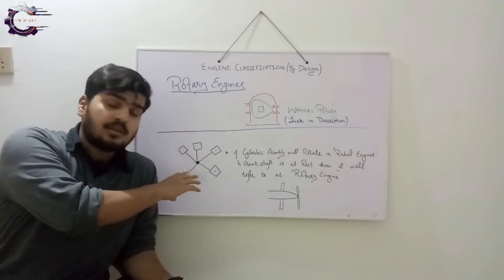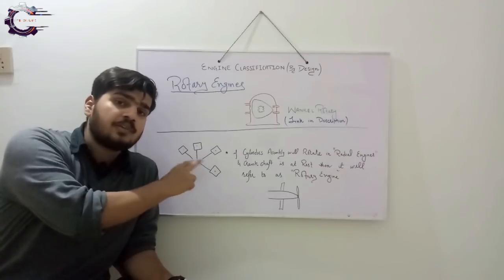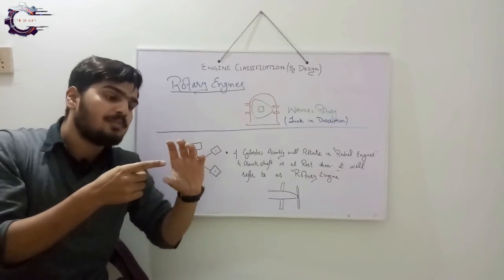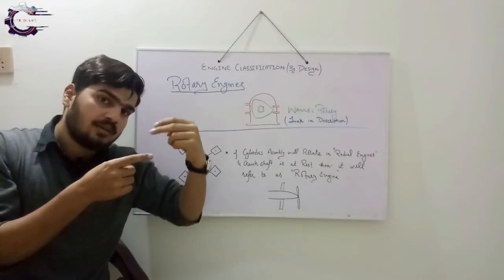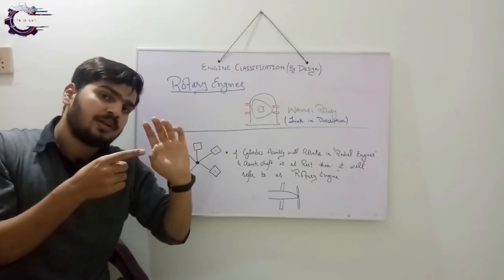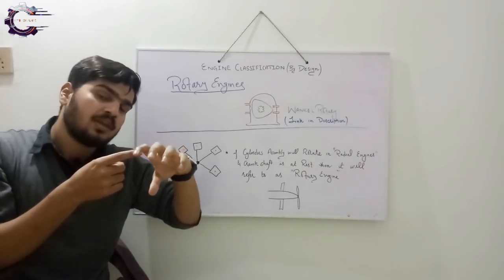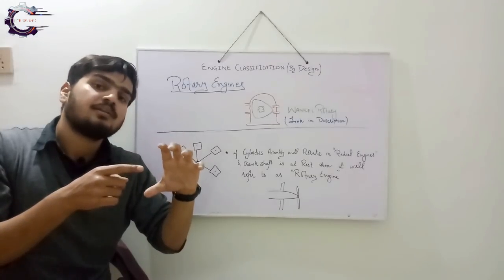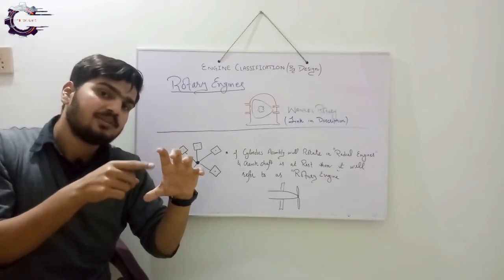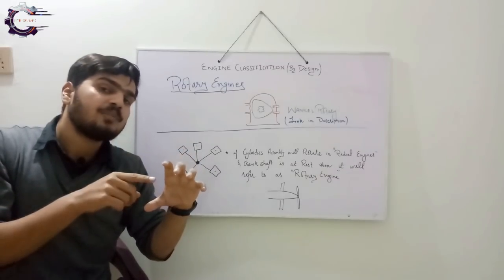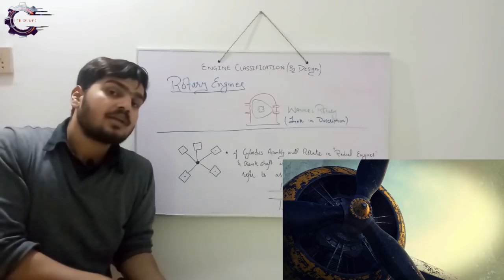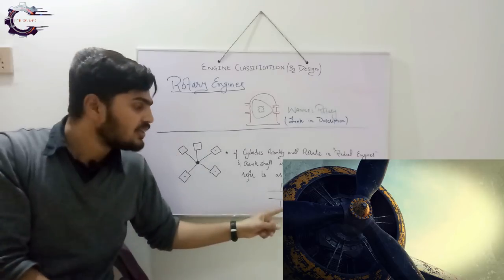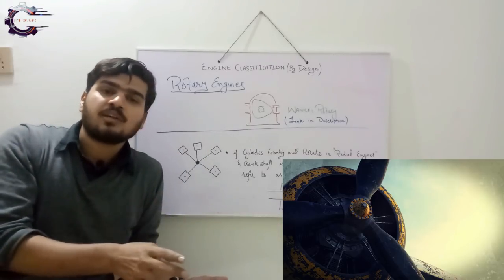Here you can see a set of pistons arranged in a circular manner. If the crankshaft of this type of engine is fixed and the whole assembly of pistons including the cylinders rotates, and the pistons reciprocate and rotate as well with the whole assembly, then it will be called a rotary engine. That's the main difference between a radial engine and a rotary engine. Both of these designs were used in aviation aeroplanes before the invention of turbojet and turboprop engines.